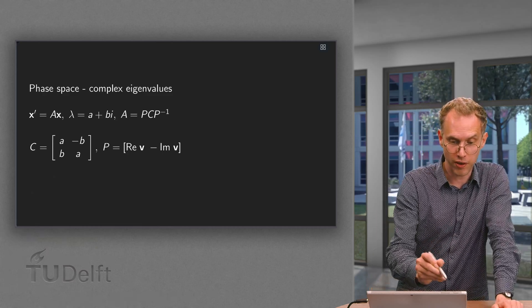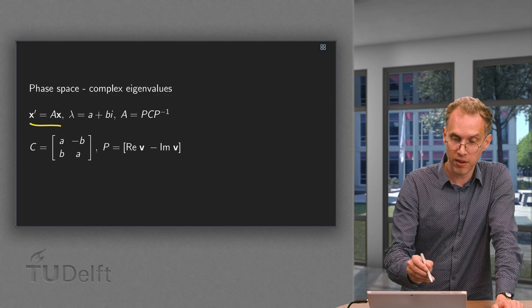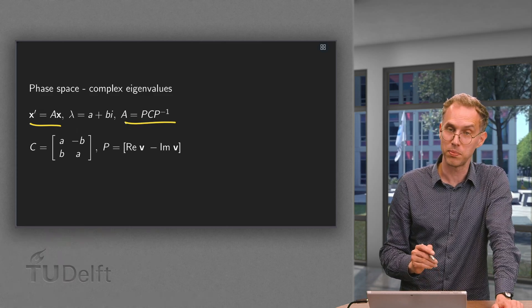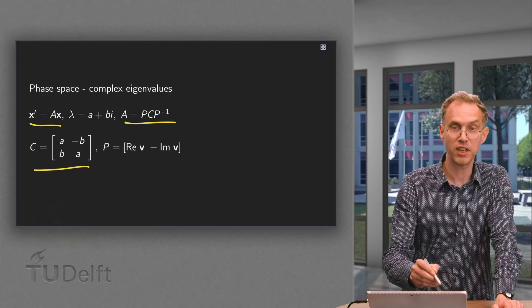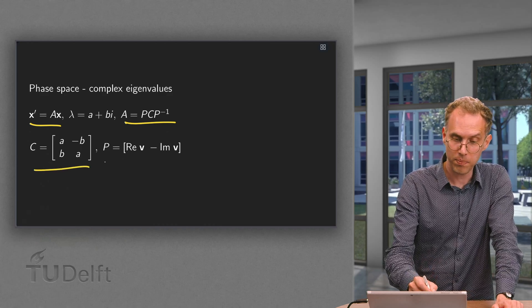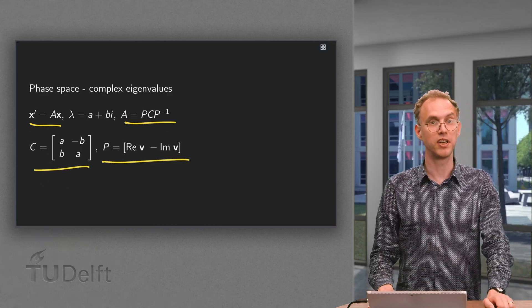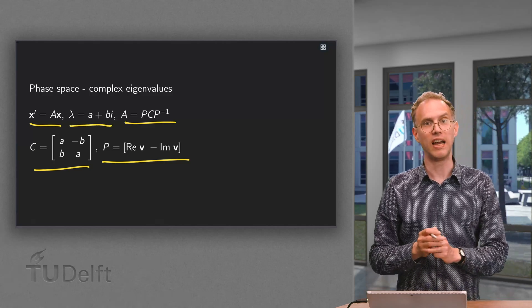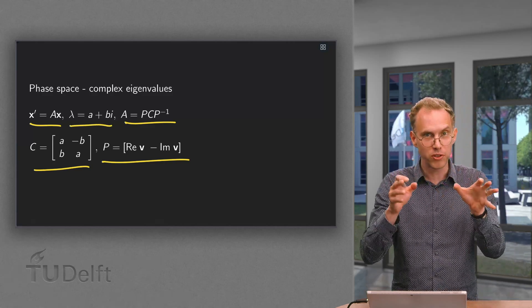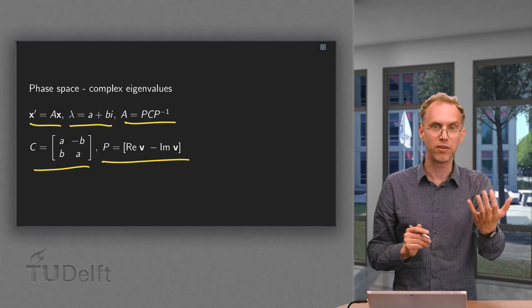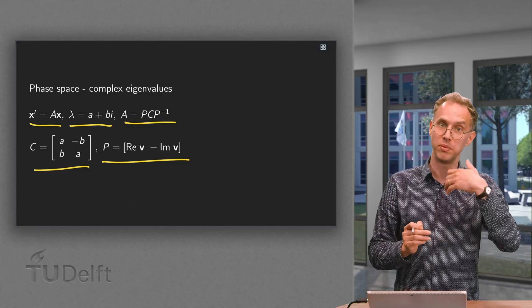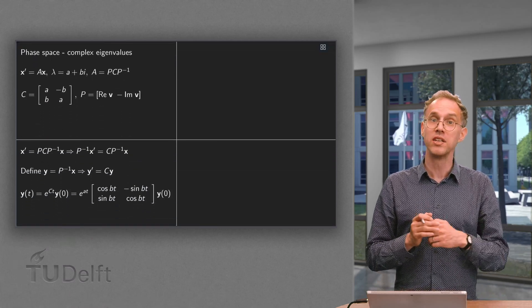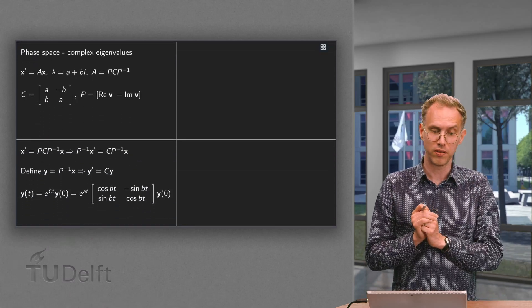So here we have x prime equals a times x, where a is now equal to some p times c times p inverse, where c is a scaling rotation matrix, and p contains the real part of v and minus the imaginary part of v, and where lambda equals a plus bi. So we imagine we can do all those computations. We have already found lambda, we have already found v, which means that we have already found c and p. So how are we going to broaden the face space?